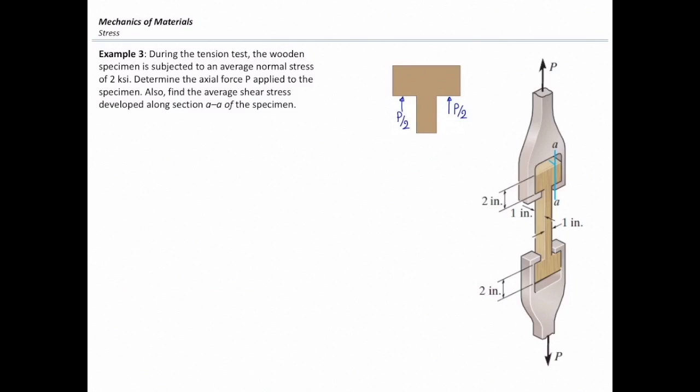It says that if the normal stress at this section is 2 KSI, how much would be the total axial force that applied in this test? Also, I want to determine what is the stress developed at the side element at section AA. So, this question has two parts.